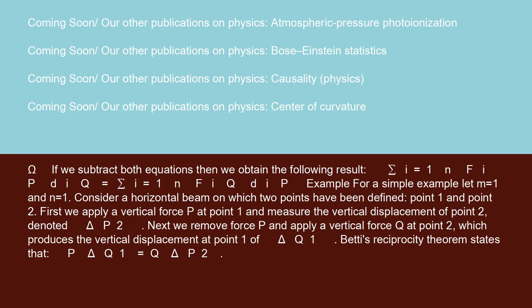If we subtract both equations, then we obtain the following result: Σ(i=1 to N) F_iP · D_iQ = Σ(i=1 to N) F_iQ · D_iP. This is Betti's Theorem.